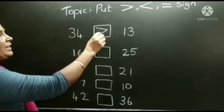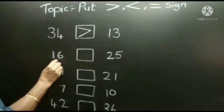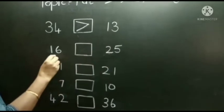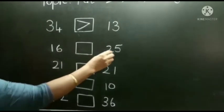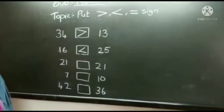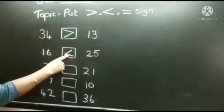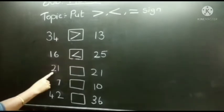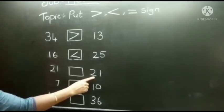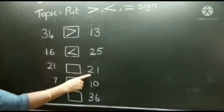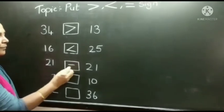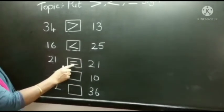This sign is called greater than. Now the next number is 21. Here also the same number, 21. Both the numbers are equal. So what will we do children? We will put the equal sign. This is called the equal sign.